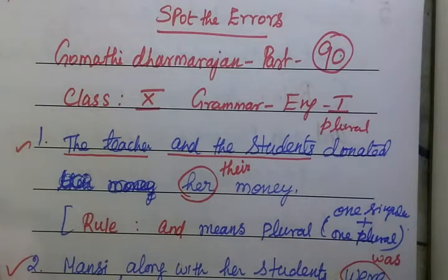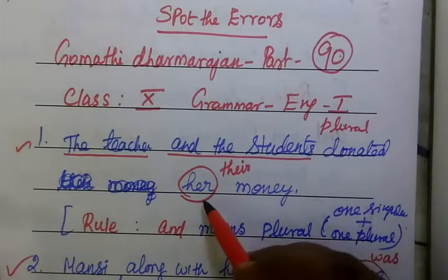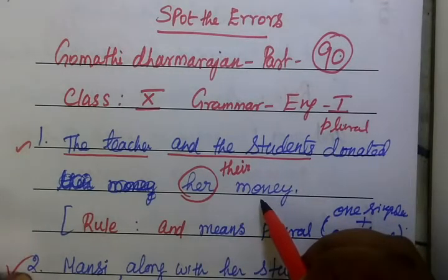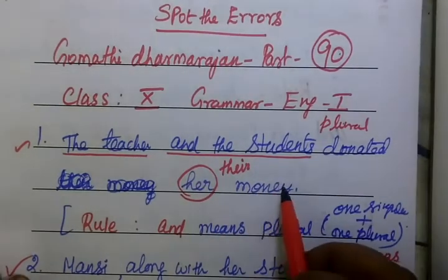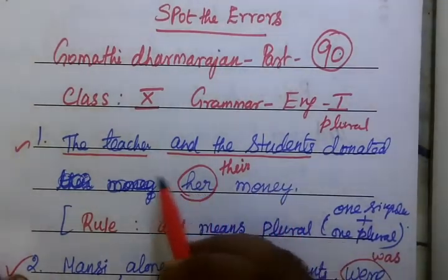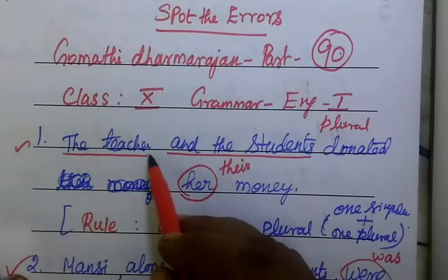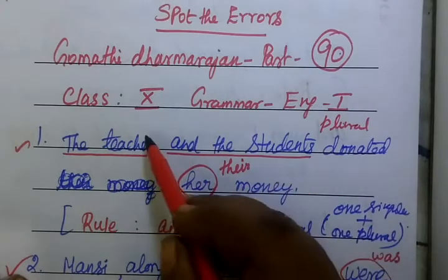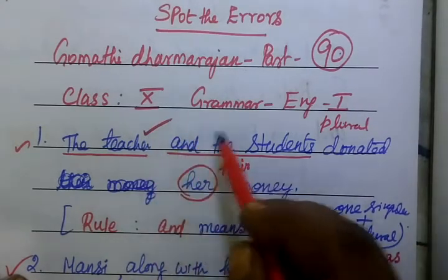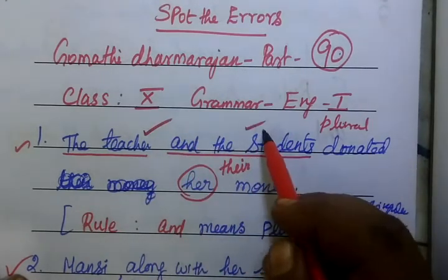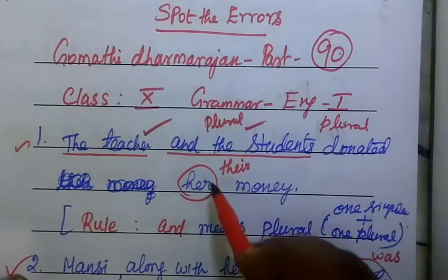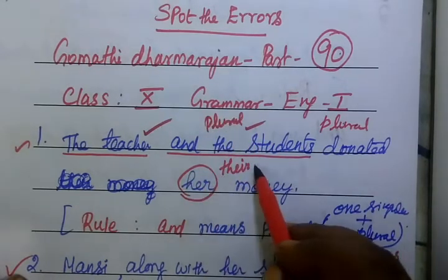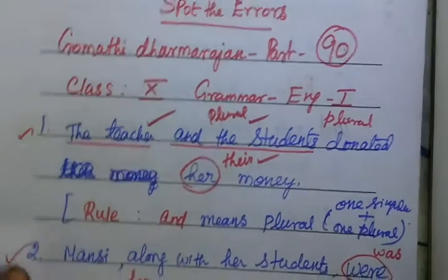The teacher and the students donated her money. Here we have teacher and students — both are joined by 'and', which makes this a plural form. So since it is plural form, the correct answer is 'their', not 'her'.